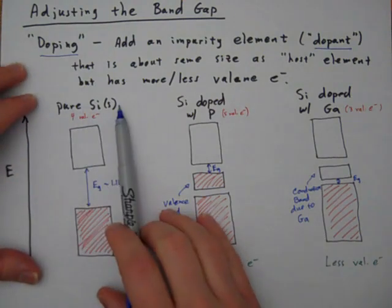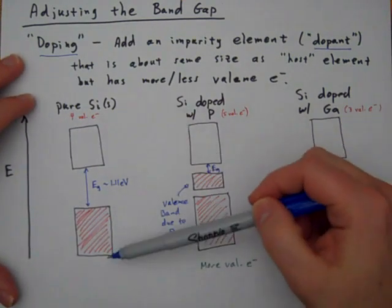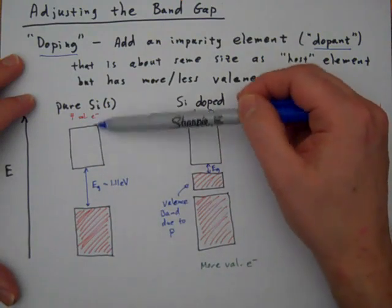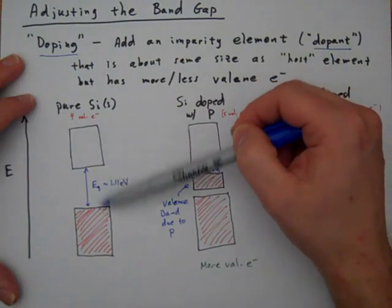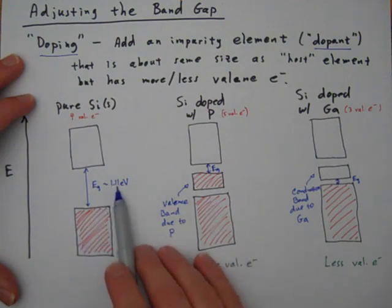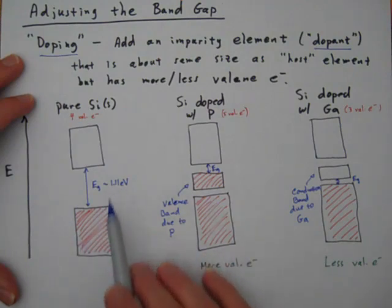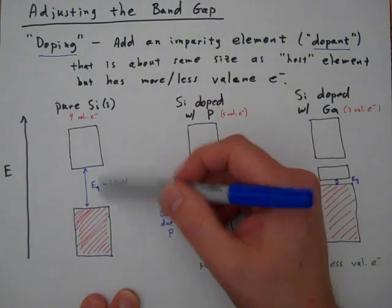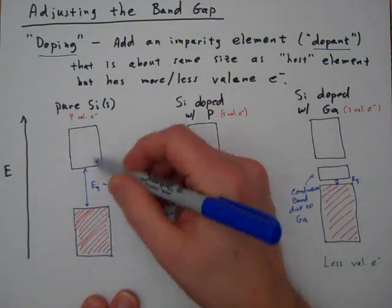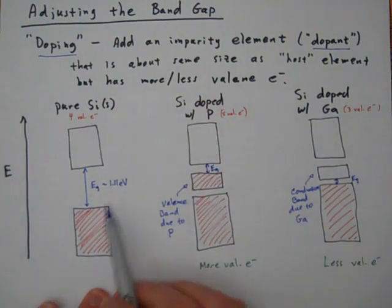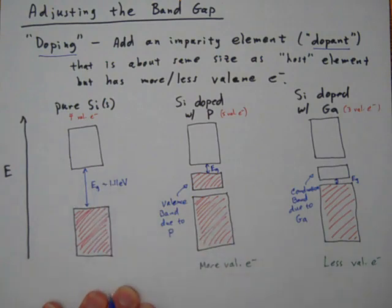So let's consider again pure silicon. So you'll remember from the last video that there is a filled valence band and an unfilled conduction band, and that there's a smallish band gap between those. It turns out that the band gap is about 1.11 electron volts. The electron volt is a unit of energy, and you can look up conversion factors if you wanted to convert that to kilojoules per mole. But anyway, so this is a small to medium sized band gap. It's still substantial enough that you have to put in a good amount of energy, either through voltage or heat, to get those electrons to transfer. So let's say we wanted to adjust this band gap to make it smaller.